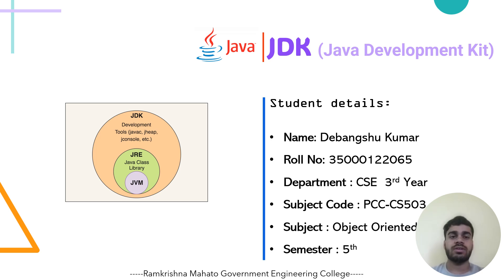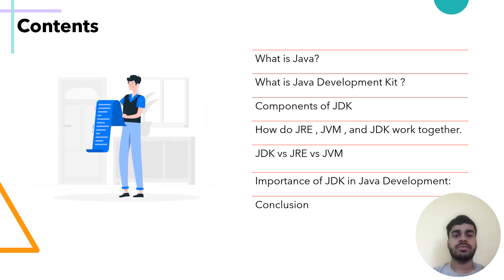Welcome everyone. This is Devanshu Kumar. My role number is 65. In this presentation, I will discuss about JDK or the Java Development Kit. This presentation will cover what is Java, what is the Java Development Kit and its components, how JRE, JVM and JDK work together, the key differences between JDK, JRE and JVM, and the importance of JDK in Java development. Now let's see all these points one by one.